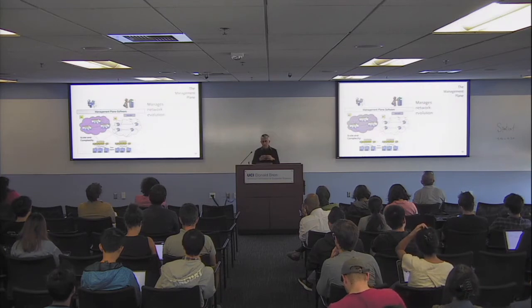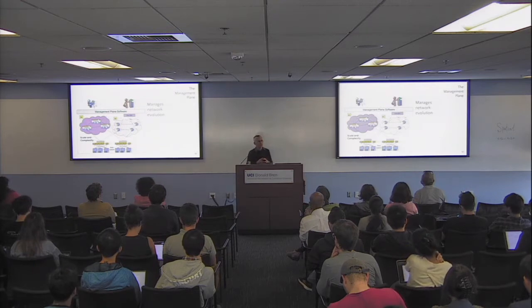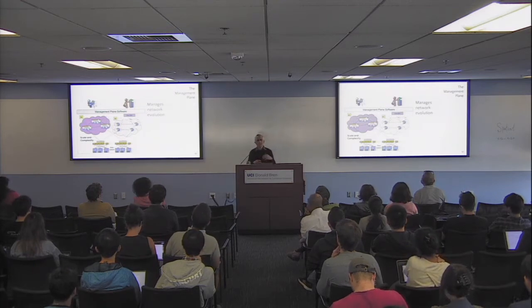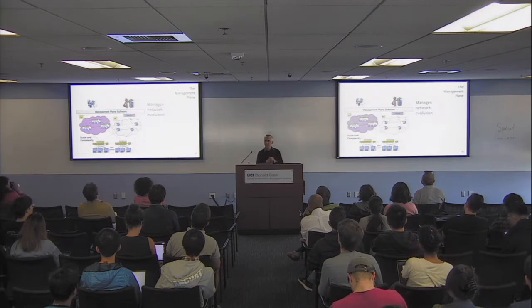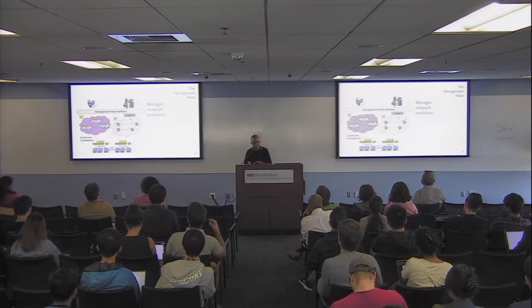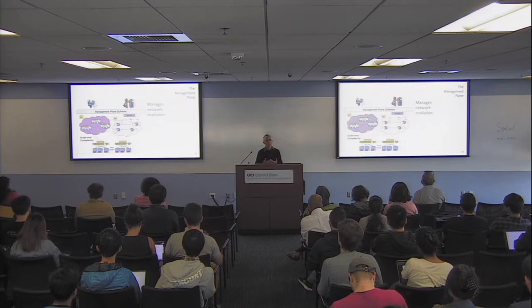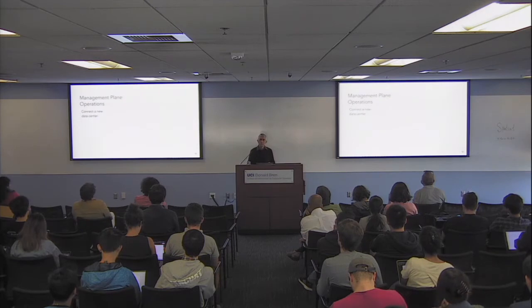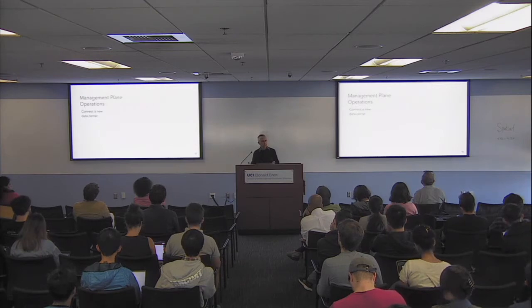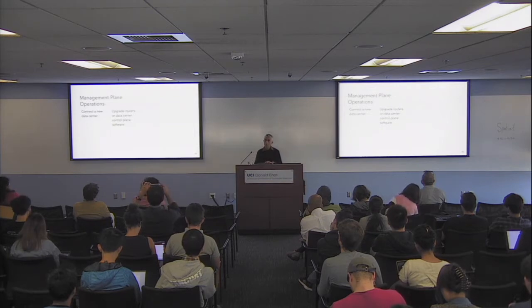For the rest of the talk, there are terms called data plane and control plane. The data plane is what sends your traffic; the control plane figures out where and how to send traffic. There is also the management plane, consisting of software and people managing the network. Managing means connecting a data center, upgrading routers, or any kind of software — these are all management plane operations.